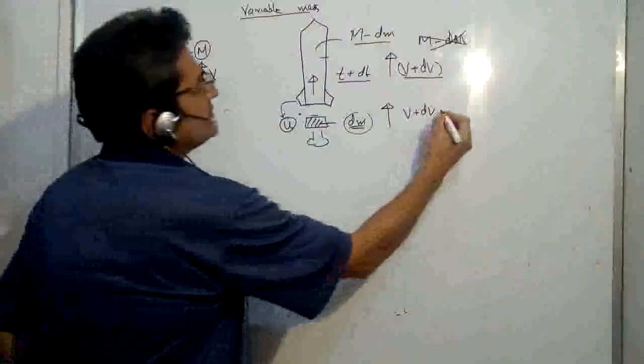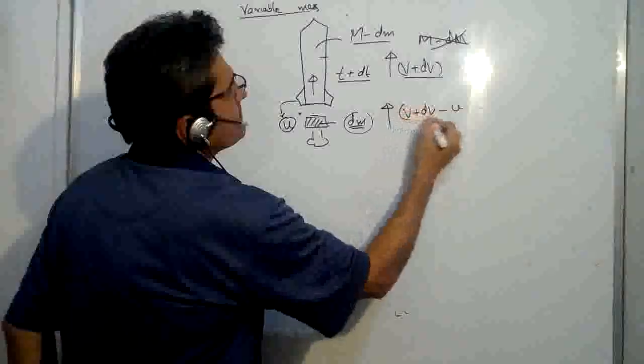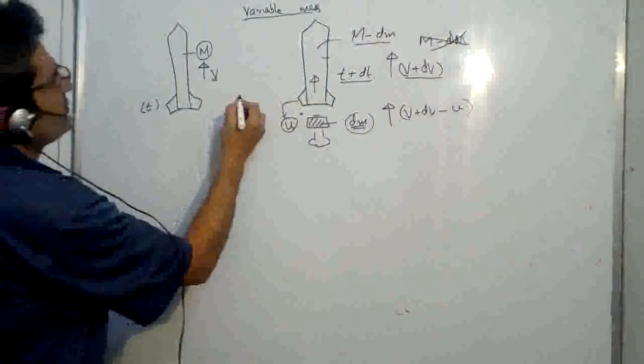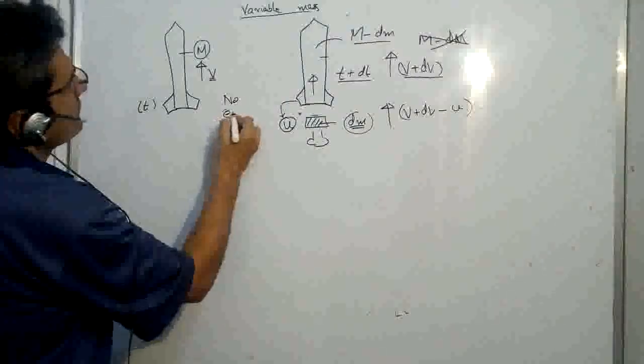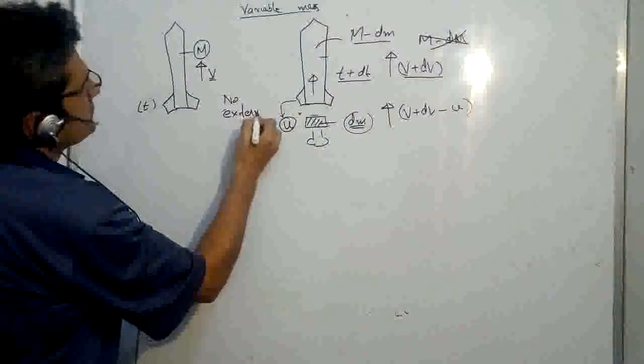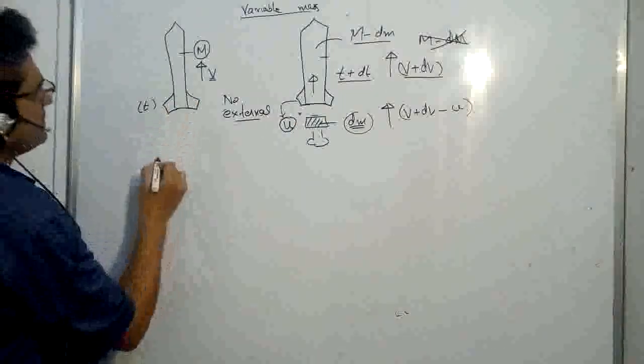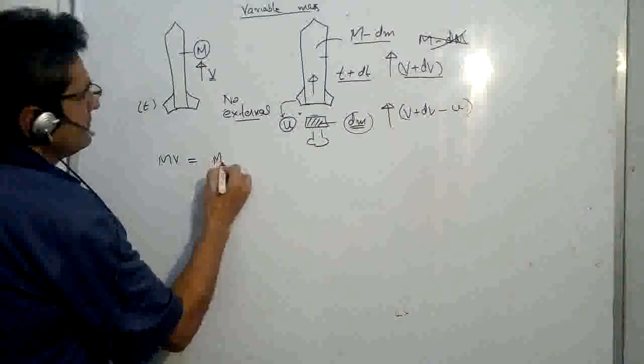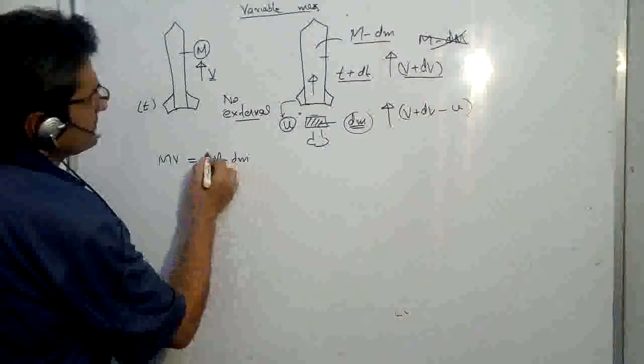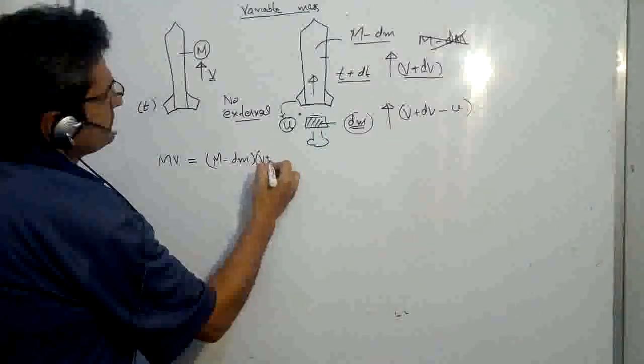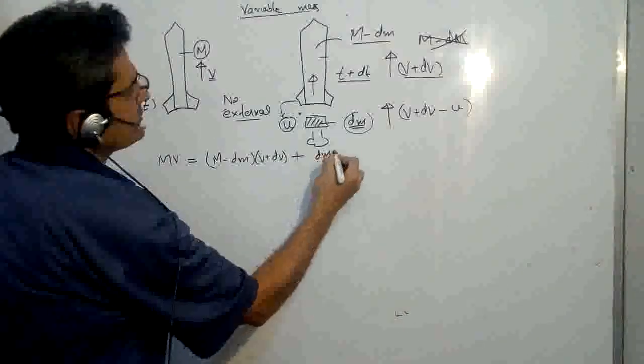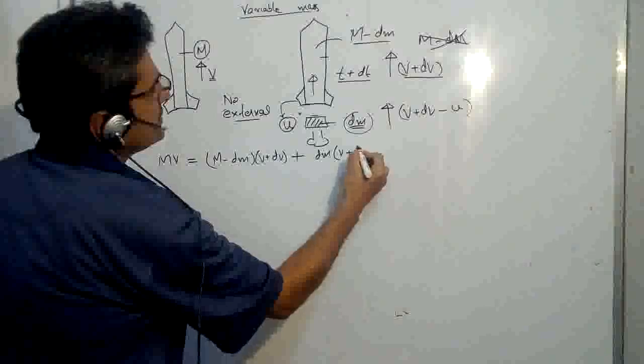We presume, we assume that no external force is acting, so the momentum is conserved. So the momentum here is mv will be equal to final momentum, which is m minus dm - this is small dm please note - times v plus dv, plus dm mass of exhaust into v plus dv minus u.